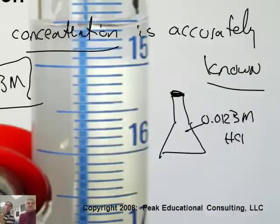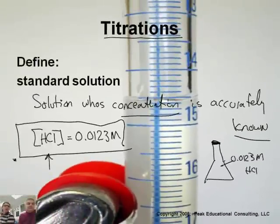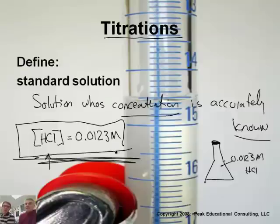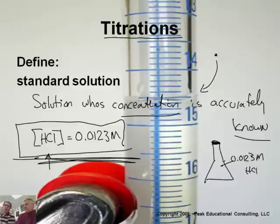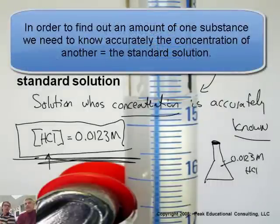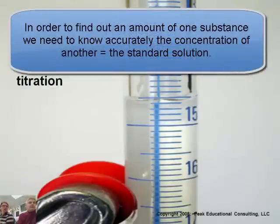The reason we need a standard solution when we do titrations is because a titration is an experiment to determine the concentration of a substance — or something else about it. We're going to find how much of the unknown we have, but we have to know something about the other substance, its concentration in this case.